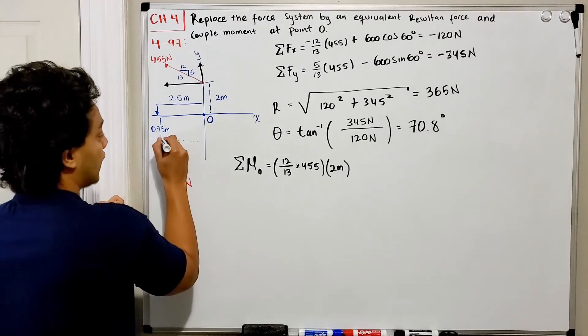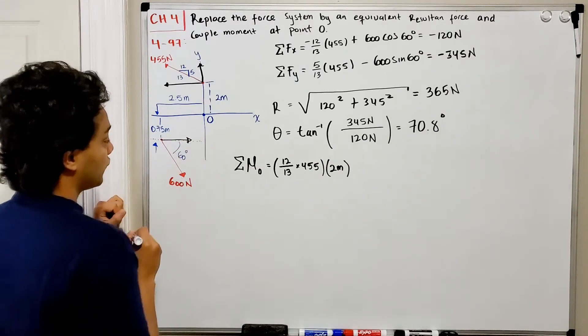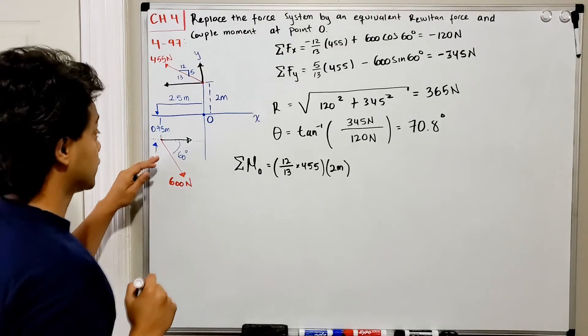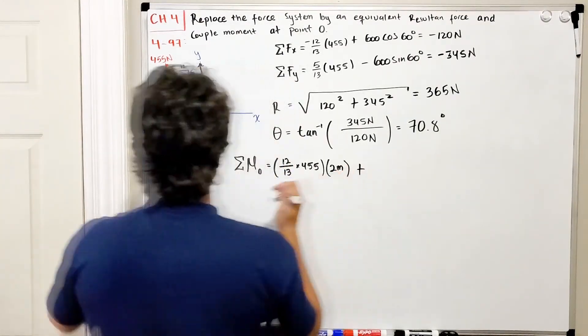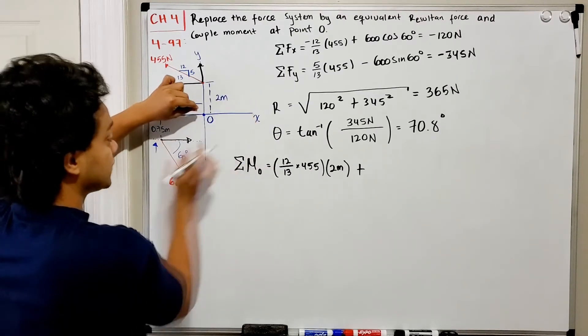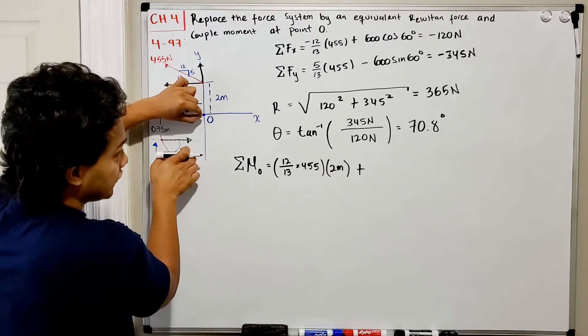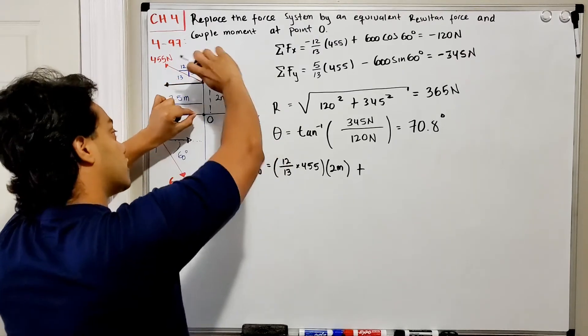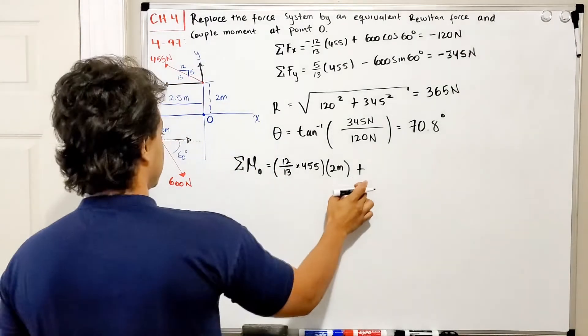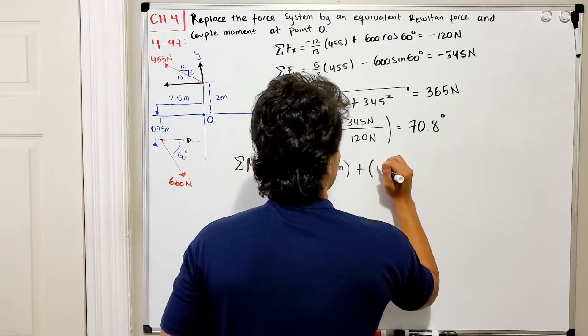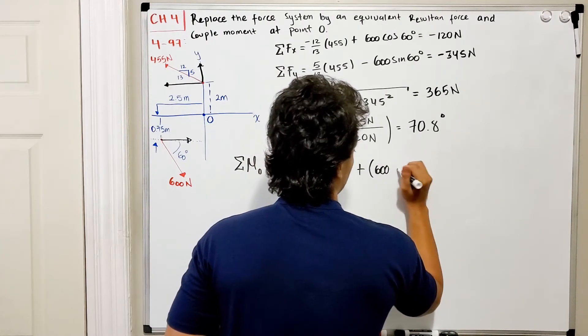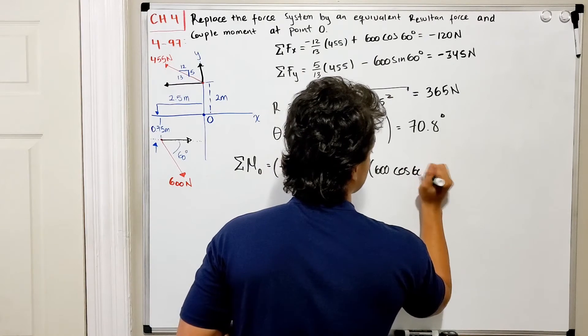What about the second force? We have the x component going that way. If we hold this and rotate the system, pushing from this side, it goes counterclockwise. So positive, and the force is 600 multiplied by cosine of 60 degrees.